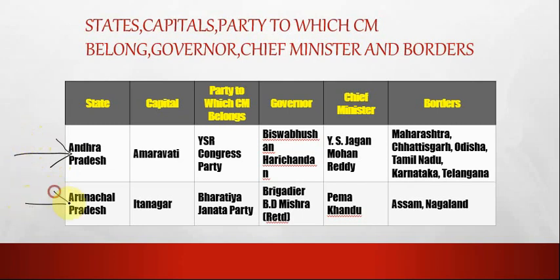The second state is Arunachal Pradesh. The capital of Arunachal Pradesh is Itanagar. The party to which the CM belongs is Bharatiya Janata Party. The governor of Arunachal Pradesh is Brigadier B.D. Mishra (retired). The chief minister is Pema Khandu. The borders are Assam and Nagaland.